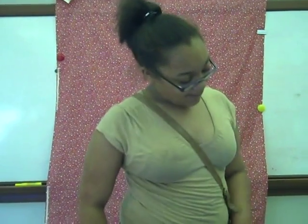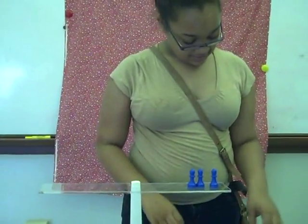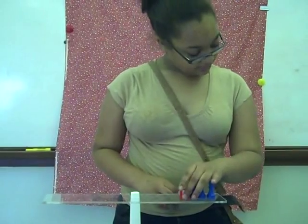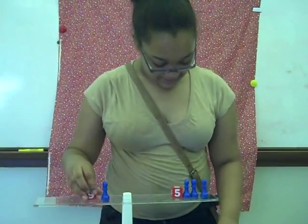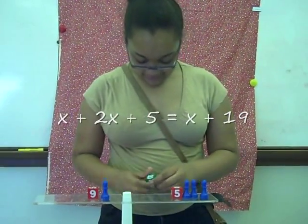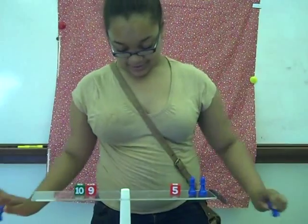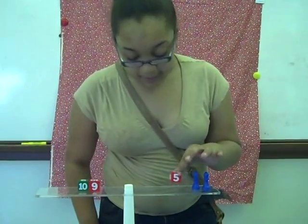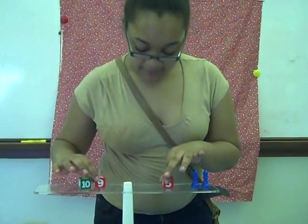Our problem is x plus 2x plus 5 equals x plus 19. We're going to take away illegal moves. And since there are no more pawns on this side, we're going to take away 5. We're going to take away 5 from 19.